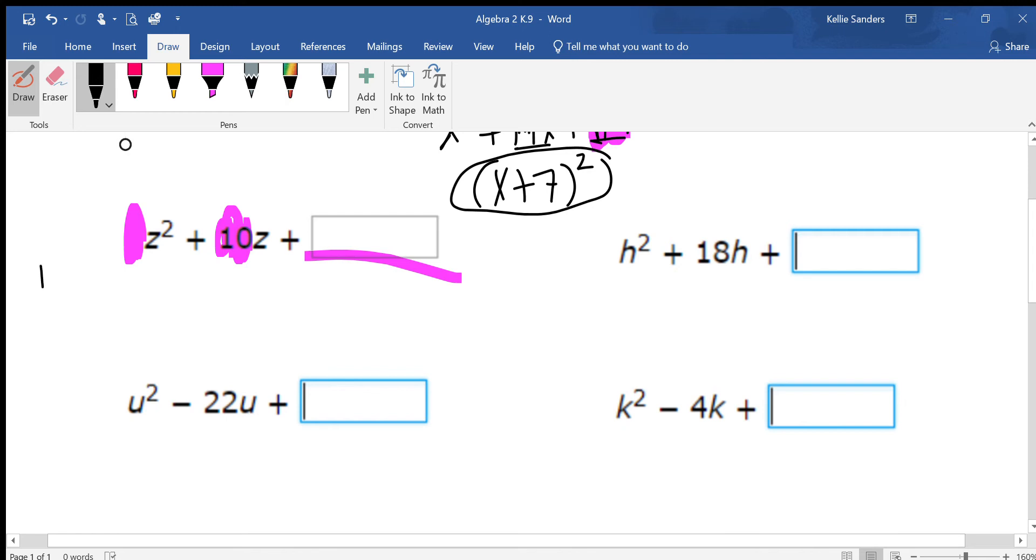And so what you do, you put B over 2. I got a bad pen again. So we got B over 2, which means divide B by 2. If you can reduce, then reduce.